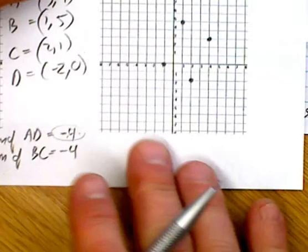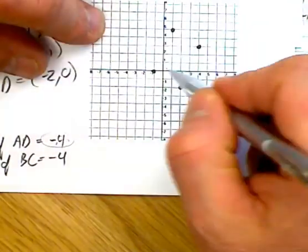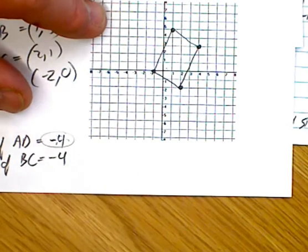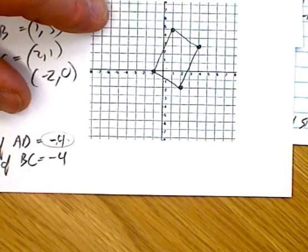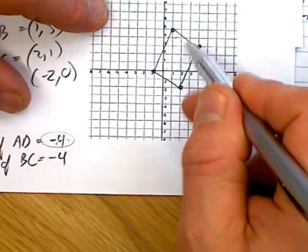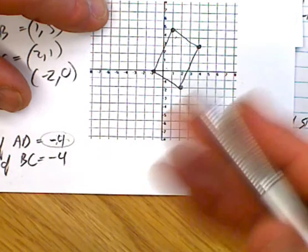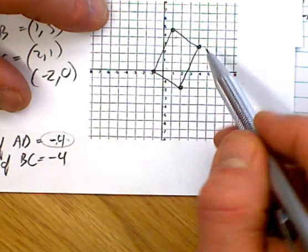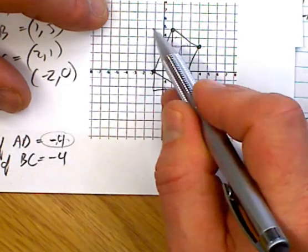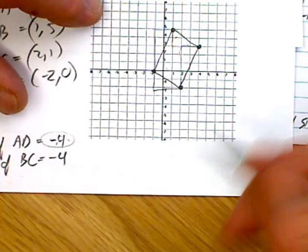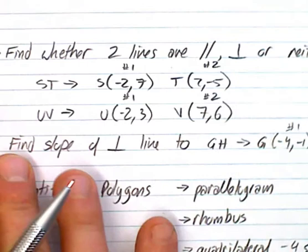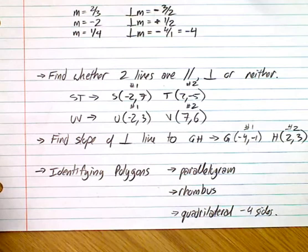For a similar example with points like (1, 5), you plot them, draw the shape, and check the slopes. This one doesn't look like a square since the angles aren't 90 degrees, but the sides may be parallel. Finding the slopes — negative two thirds and five halves — these are not negative reciprocals, so no right angles, but opposite sides are parallel, making this a parallelogram. We're simply applying parallel and perpendicular line concepts to classify shapes.